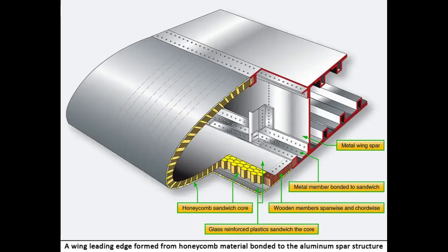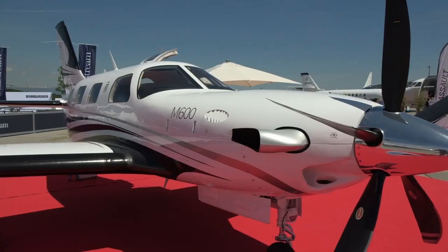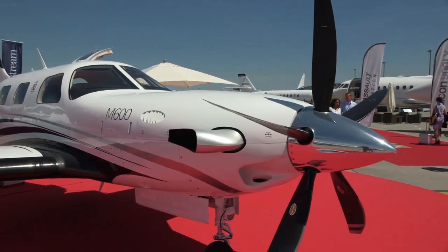A honeycomb panel can be made from a wide variety of materials. Aluminum core honeycomb with an outer skin of aluminum is common, but honeycomb in which the core is an aramid fiber and the outer sheets are coated phenolic is common as well. A myriad of other material combinations — such as those using fiberglass, plastic, Nomex, Kevlar, and carbon fiber — all exist. Each honeycomb structure possesses unique characteristics depending upon the materials, dimensions, and manufacturing techniques employed. An entire wing leading edge can be formed from honeycomb structure.